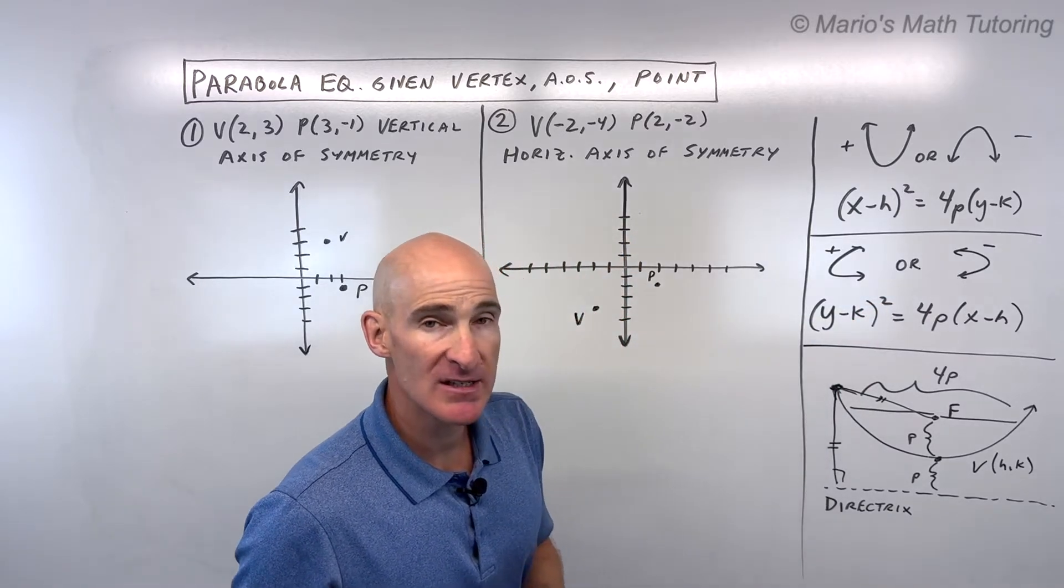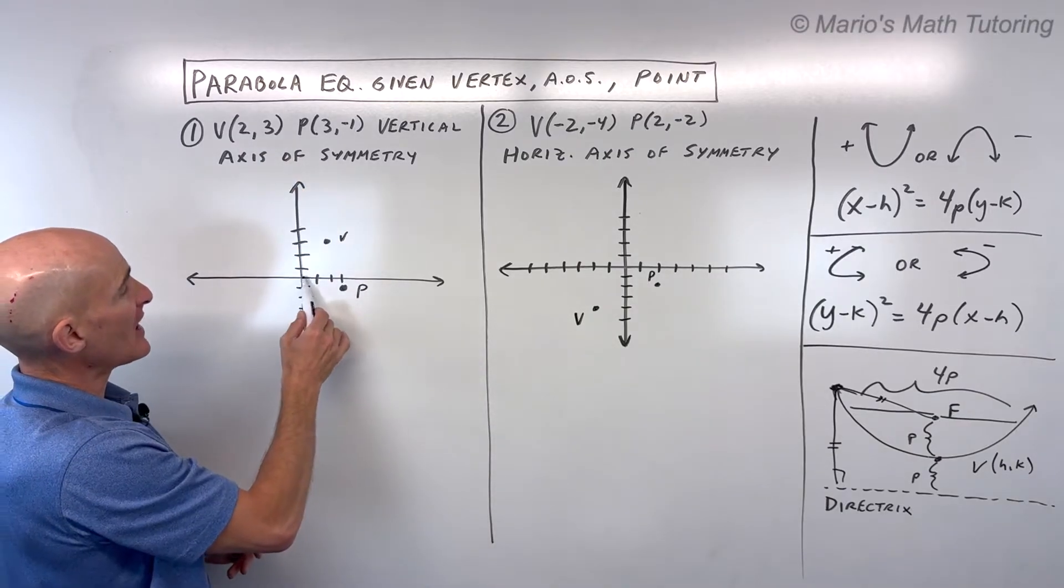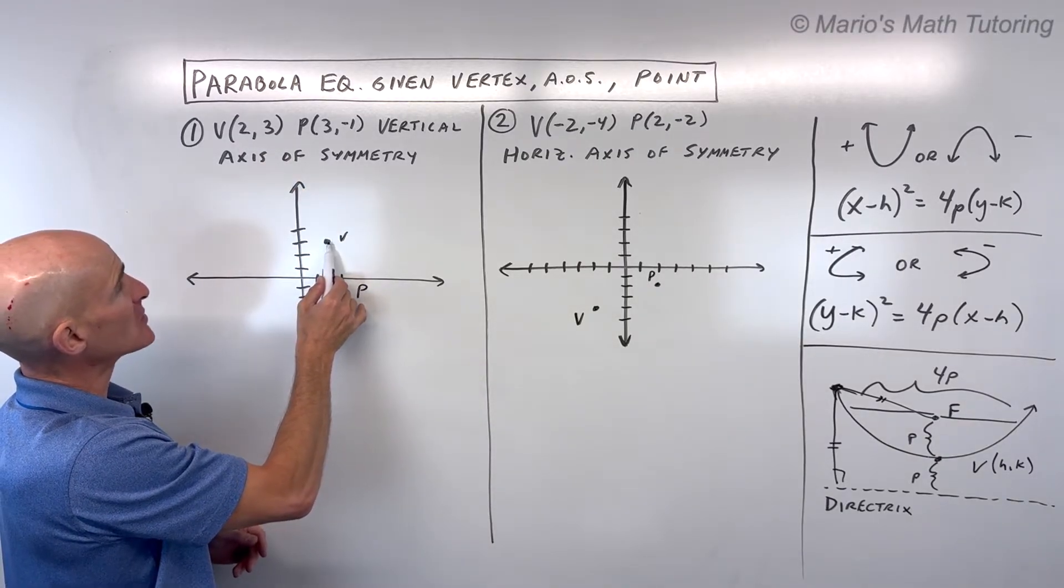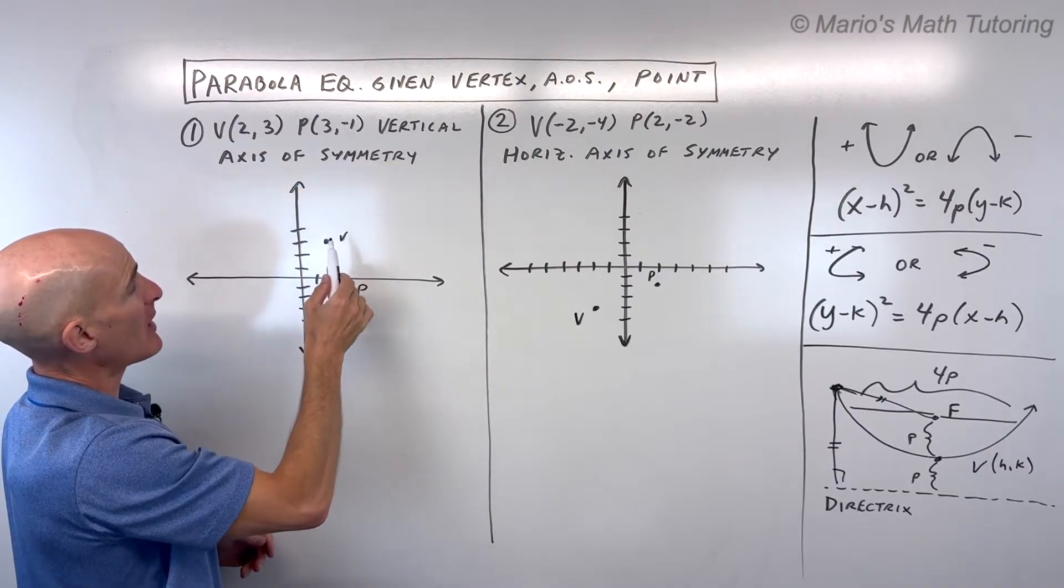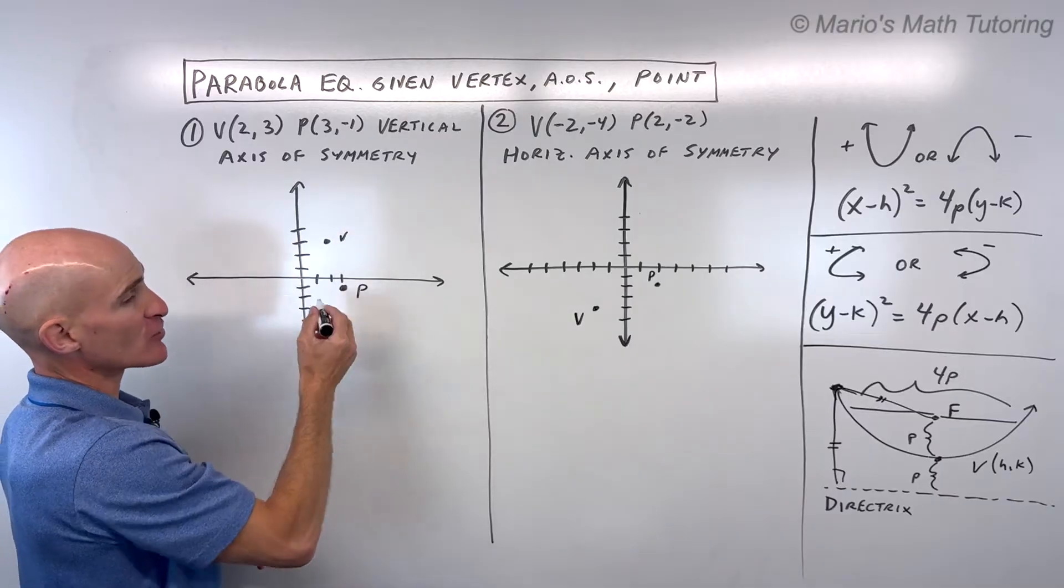So let's see if we can dive into this first example, I'll explain as I go. We're given the vertex is at (2,3), that's where it bends, and there's a point on the parabola which is (3,-1), that's point P, and it has a vertical axis of symmetry.